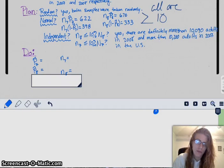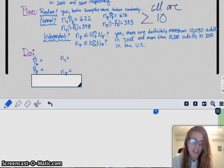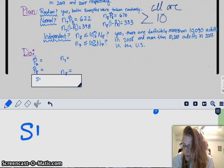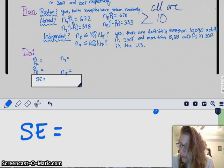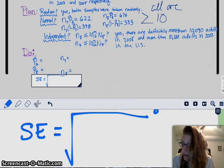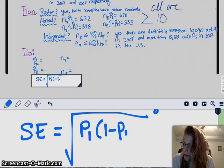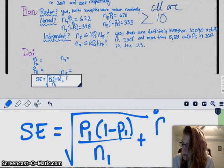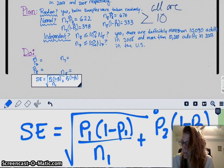We're going to need our standard deviation, and in this case, it's actually going to be our standard error, just because we don't actually know P, the true proportion in 2007, or the true proportion in 2008. So we have to use the statistic to estimate it. So my standard error is going to be that formula, the square root of P1 times 1 minus P1 all over N1 plus P2 times 1 minus P2 all over N2.